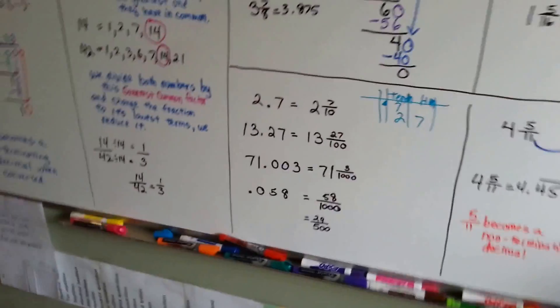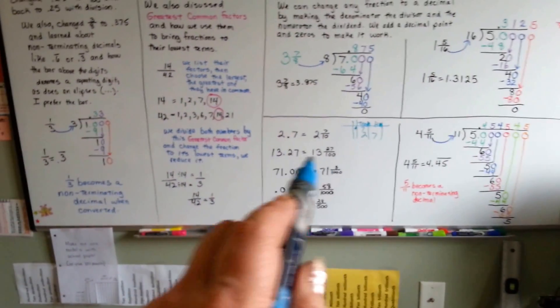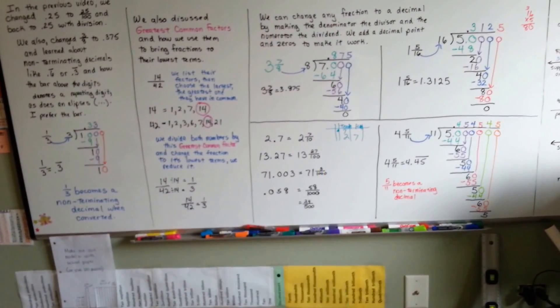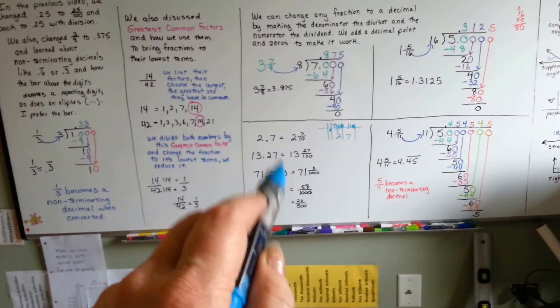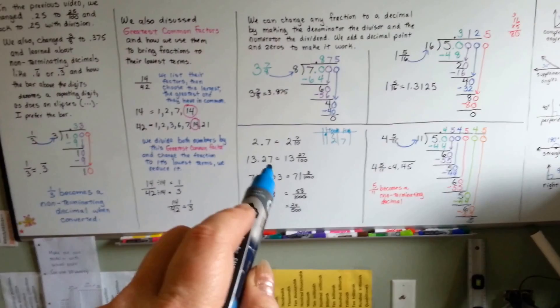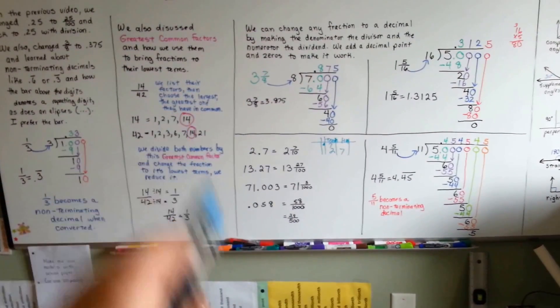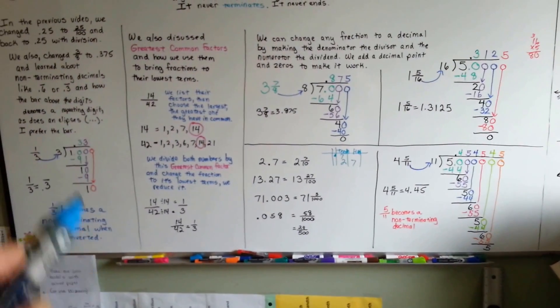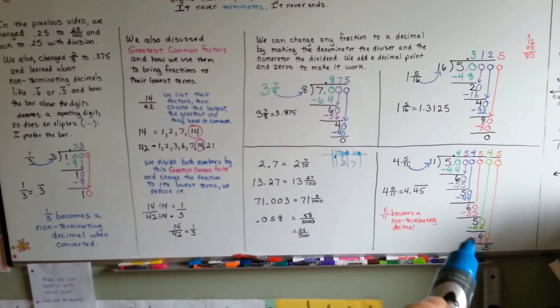So, this is how you convert fractions and decimals. Going from a decimal to a fraction is very easy because you already know the place value, what the denominator's going to be. All you have to remember is that you need to bring it to its lowest terms by using the greatest common factor. It's a little tougher to turn a fraction into a decimal because you have to do long division.